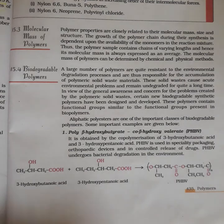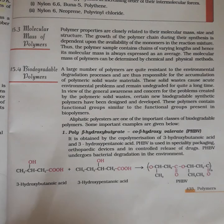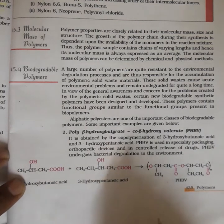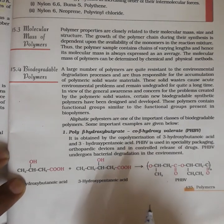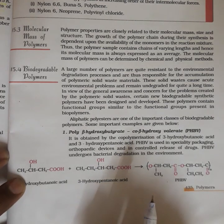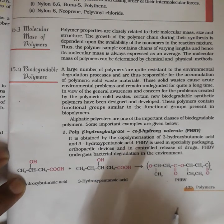Hello friends. The last and most important point of the chapter is biodegradable and non-biodegradable polymers. The polymers which can be easily degraded by environmental processes are called biodegradable polymers. Most of the polymers around us are resistant to this degradation process and result in the accumulation of solid waste on the earth, which is a major problem.